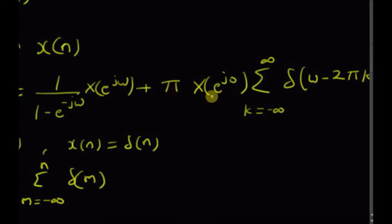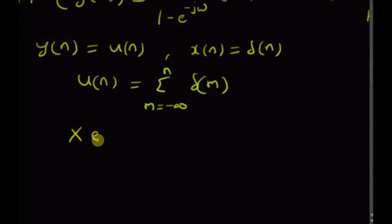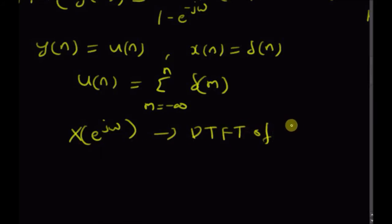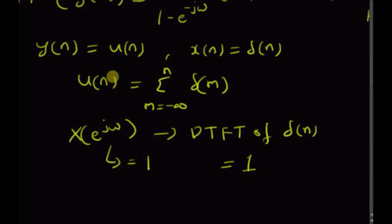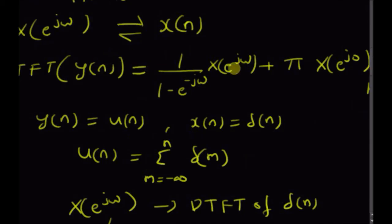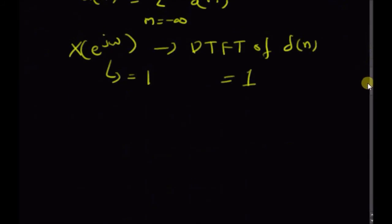Now using this property, we know that X(e^jω) is the DTFT of x(n) = δ(n), which is clearly equal to 1. That is, X(e^jω) = 1.